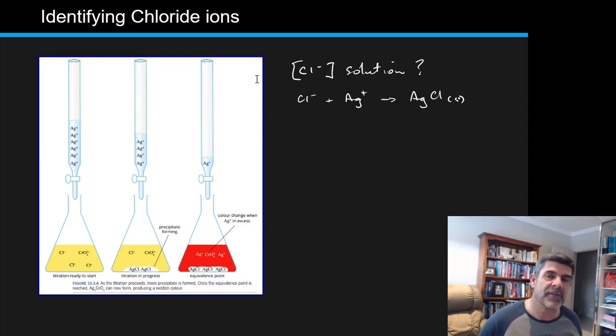There's about three different methods that you can look at for precipitation titrations. This particular one that I'm looking at here is called the MORE method. And effectively, what we're trying to do is, in the same way we used an indicator in our acid-base reactions to tell us when the endpoint was, we can use indicators that are either particular substances that change color or form complexes which also have a distinctive color. And each of these different methods gives us a slightly different place where the endpoint will occur.